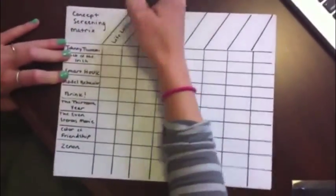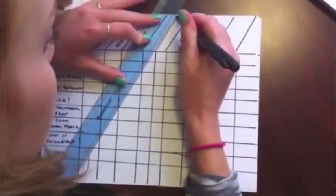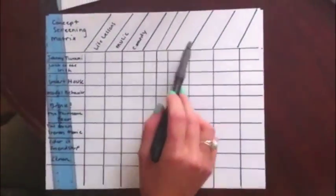We determined that a good Disney Channel movie must have the following criteria: life lessons, music, comedy, acting, script, audience appeal, IMDB rating, sequels, and star power.